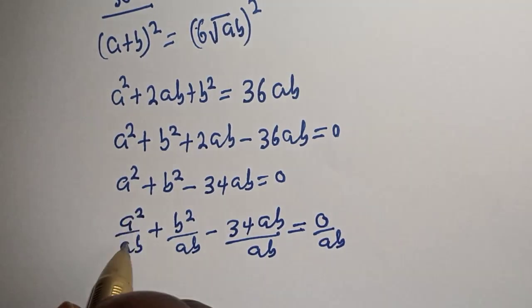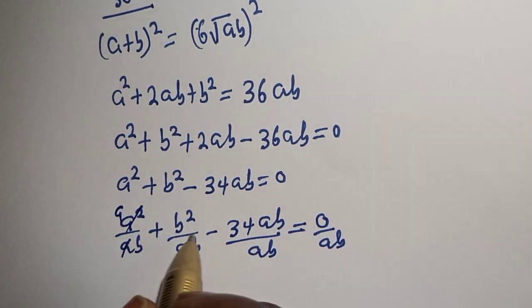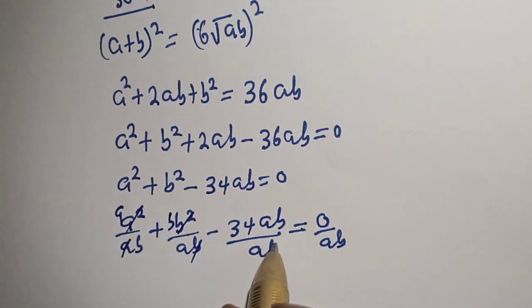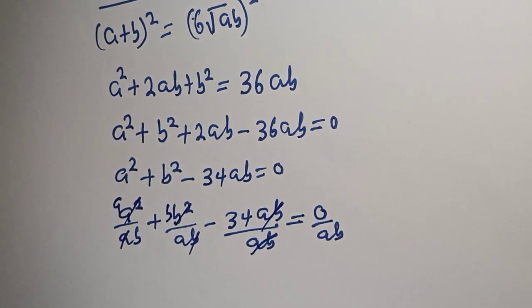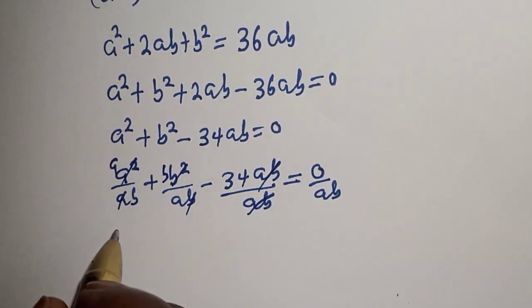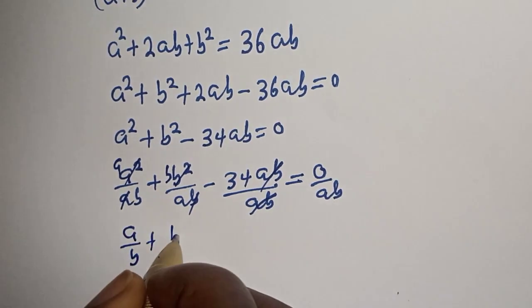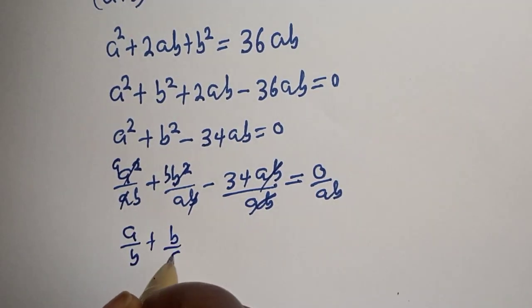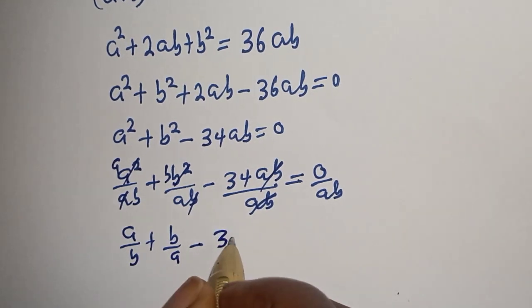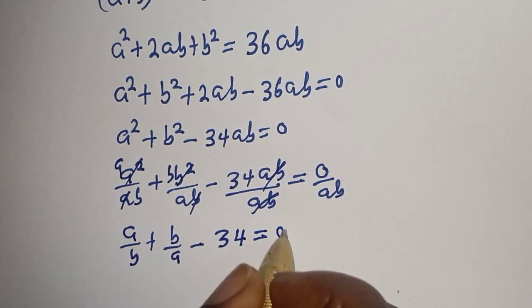From here, we cancel the A's and the B's in each term. We are left with A over B plus B over A minus 34 is equal to 0.